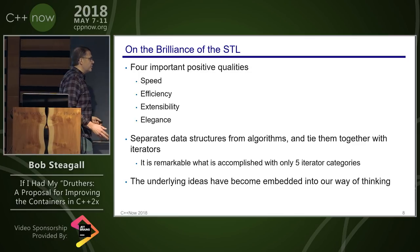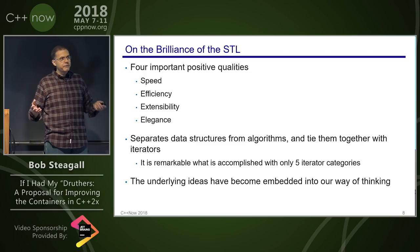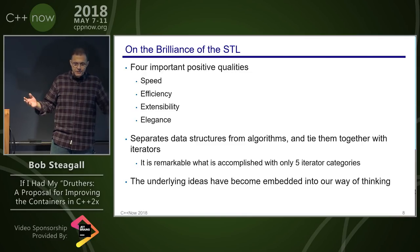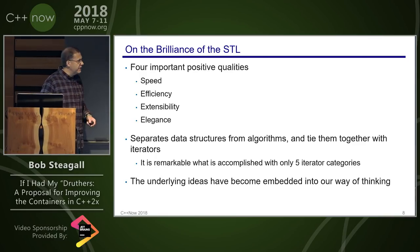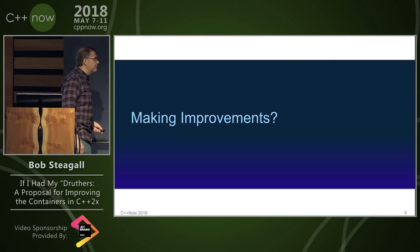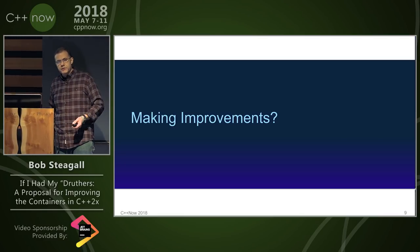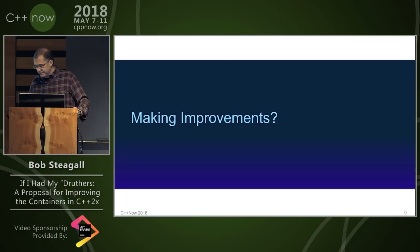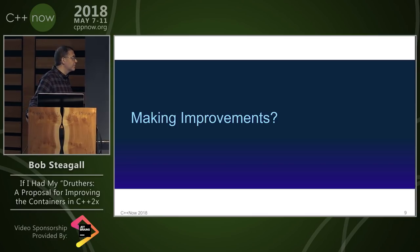The library has been so successful that these underlying ideas have become embedded in our way of thinking as C++ programmers. They're just part of us now, and sometimes it's kind of hard to think of things in other ways. So given all these great things available in the containers and algorithms, how do we make improvements? It's kind of arrogant to stand up here and say I can make it better — I'm not sure that I really can. I have some ideas and that's what I'd like to talk about.